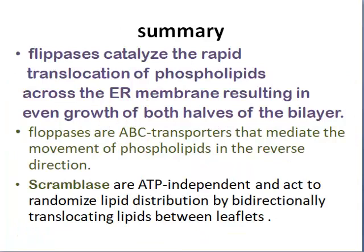Here is the summary. Flippases facilitate the rapid translocation of phospholipids across the ER membrane, resulting in even growth of both halves of the bilayer. Floppases are ABC transporters and mediate the movement of phospholipids in the reverse direction — from the cytosolic leaflet to the outer side. Scramblases are independent and distribute phospholipids bidirectionally — from outside to the cytosolic leaflet and from the cytosolic leaflet to the outer side — scramblases operate in both directions.